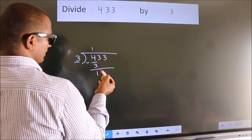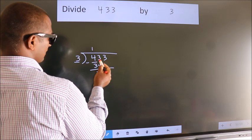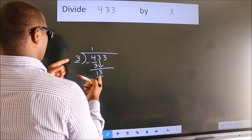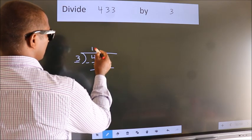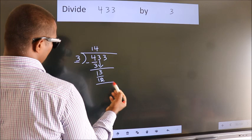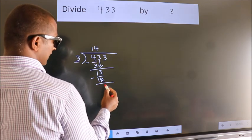After this, bring down the beside number. So, 3 down. So, 13. A number close to 13 in 3 table is 3 fourths, 12. Now, we subtract. We get 1.